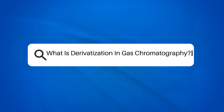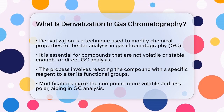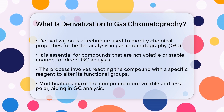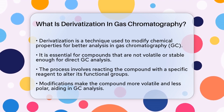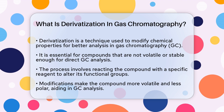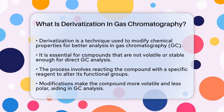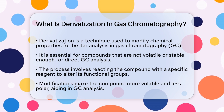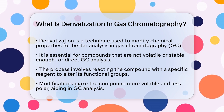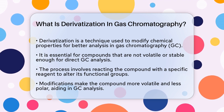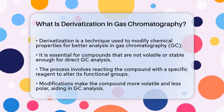What is derivatization in gas chromatography? If you're working in a lab and wondering how to make certain chemicals more suitable for gas chromatography, you're about to learn a crucial technique called derivatization. Derivatization is a process that changes the chemical properties of a compound so it can be analyzed more effectively using gas chromatography, or GC. This technique is essential because many compounds are not volatile or stable enough to be directly analyzed by GC.